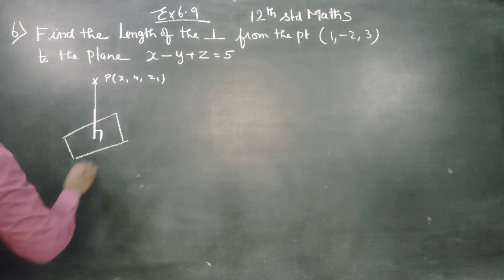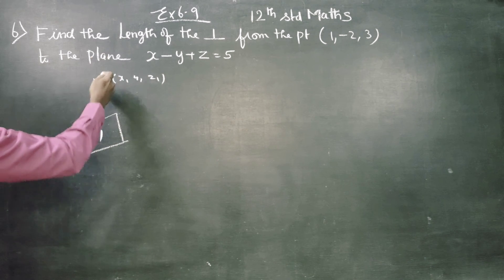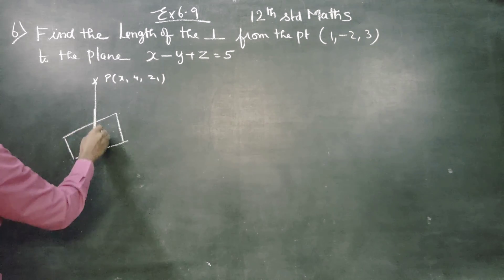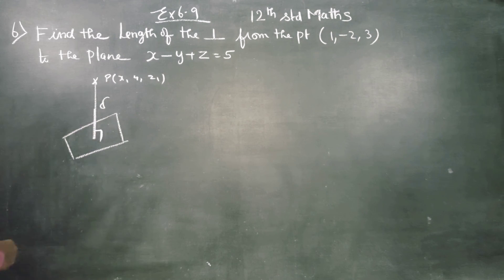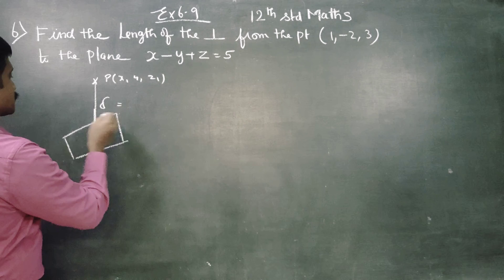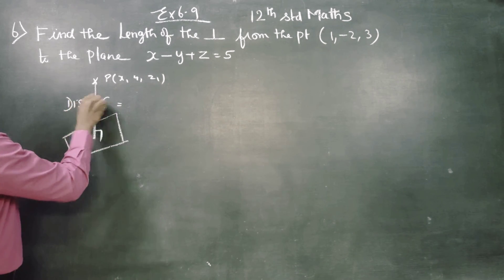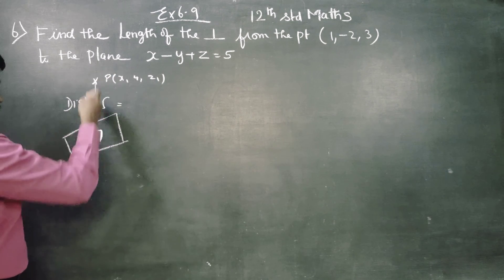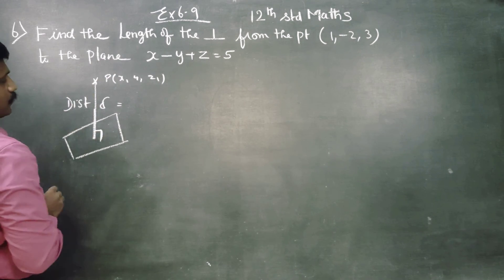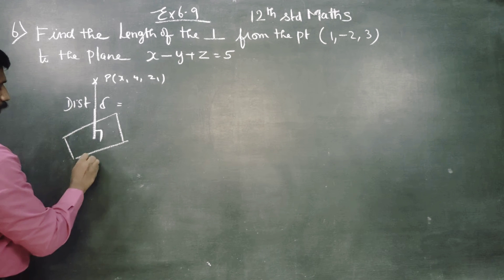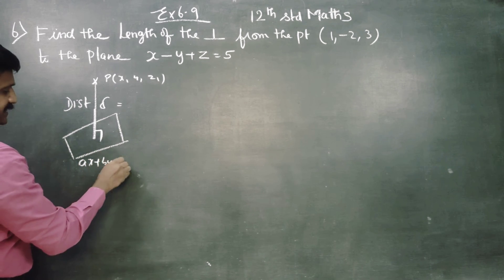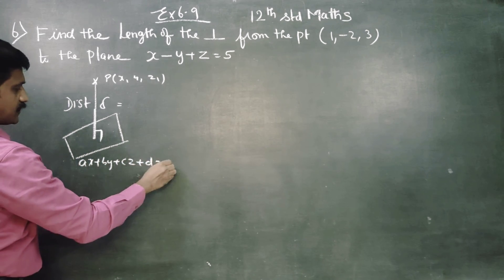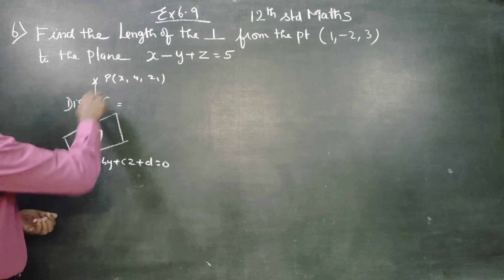If you want the distance between the point and the plane, perpendicular distance, that is the distance between point and the plane. This is a plane, and the plane has the equation ax + by + cz + d = 0. One plane equation, one point.